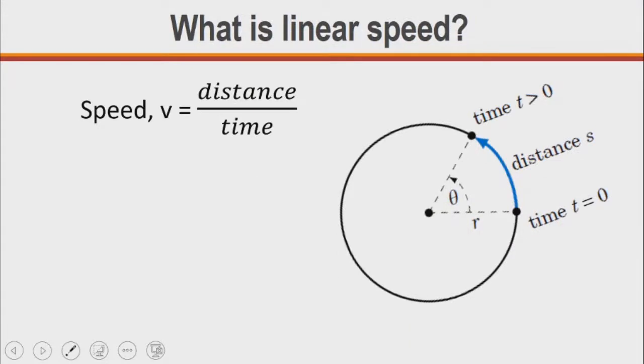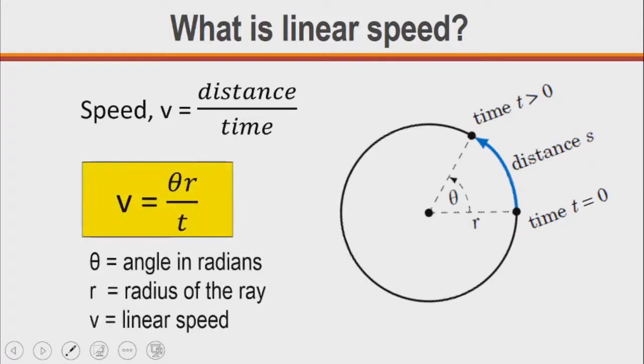The linear speed of the particle is the measure of how fast it is moving along that circular path. We know that speed equals distance over time. But in this case, our distance is arc length, so the linear speed is going to be theta r divided by the time t that it takes for the particle to move from one position to the other along this circular path. Theta is the angle in radians, r is the radius, and v is the linear speed.